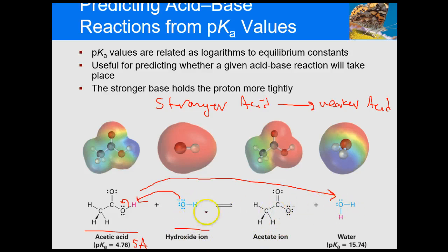The hydroxide is going from hydroxide to H2O — it's the proton acceptor, so it's the base. If acetate was part of the acid on one side, it's the base on the other side — always the opposite. So this reaction will occur because we're going from smaller pKa (stronger acid) to larger pKa (weaker acid).